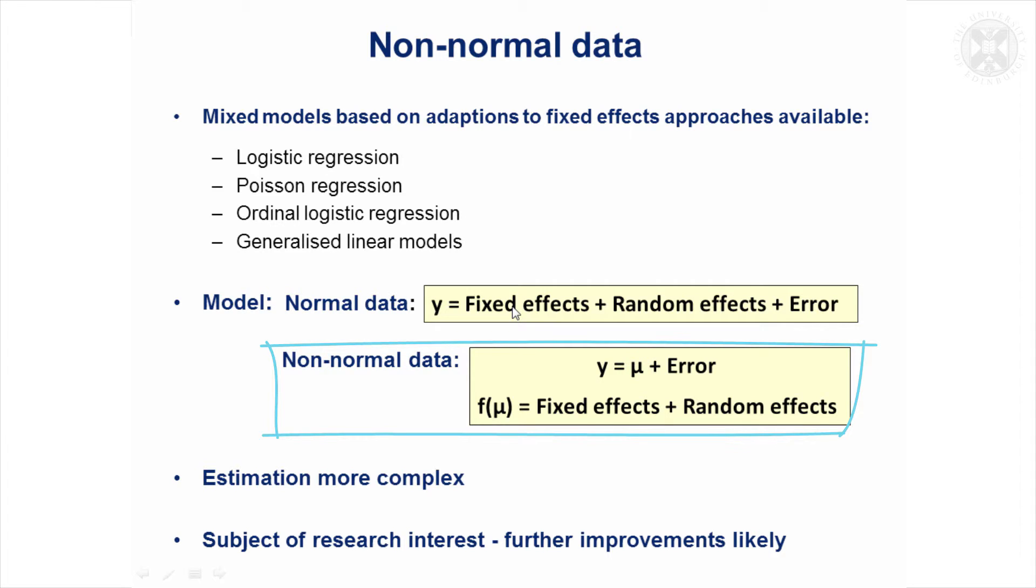But the expected values are defined in terms of the fixed and random effects after applying a function. And in the case of logistic regression, that's going to be a logit function. Poisson regression, it's going to be the log function. So, there'll be a particular function that can be applied to these expected values to put the data into a particular non-normal framework to apply to a non-normal distribution.